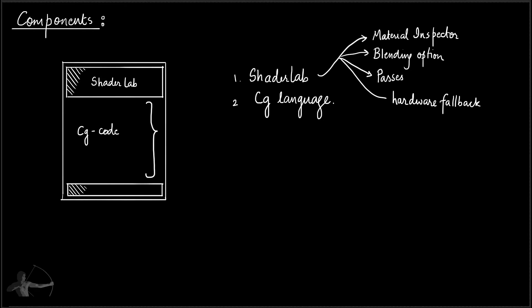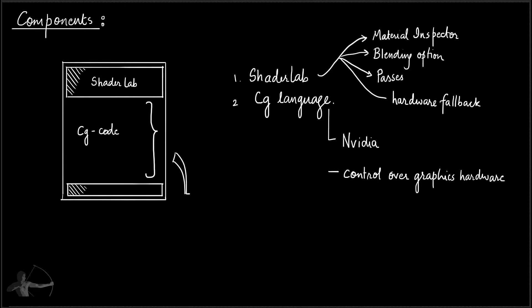The CG language is a shading language developed by Nvidia, and it is the language that gives us control over graphics hardware. Using CG language, we will write our vertex and pixel shaders. When we write the shader core in Unity, we get two options: we can write surface shaders, or we can write a combination of vertex and pixel shaders.